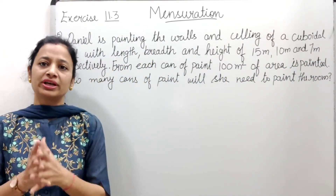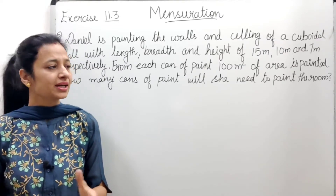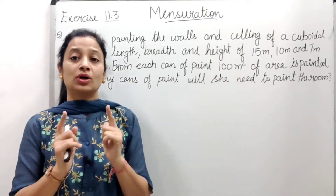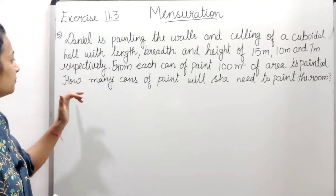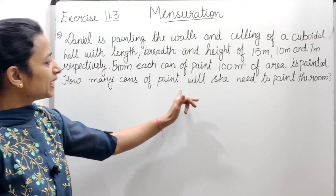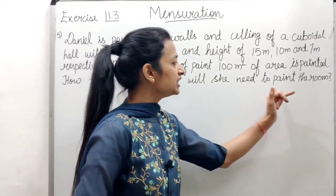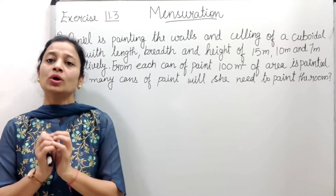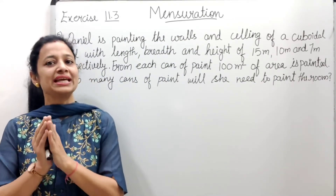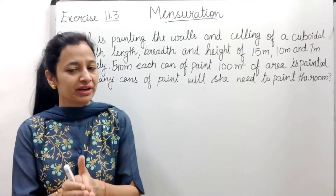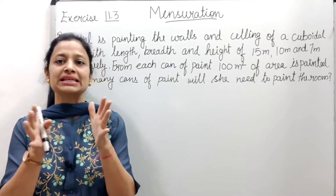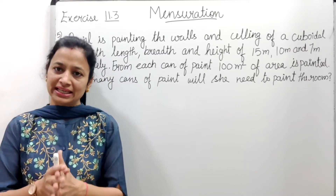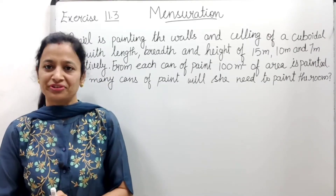Each can of paint covers 100 square meters of area. So now what we have to find is: how many cans of paint will she need to paint the complete room and hall? We have to find out how many cans of paint will be required.